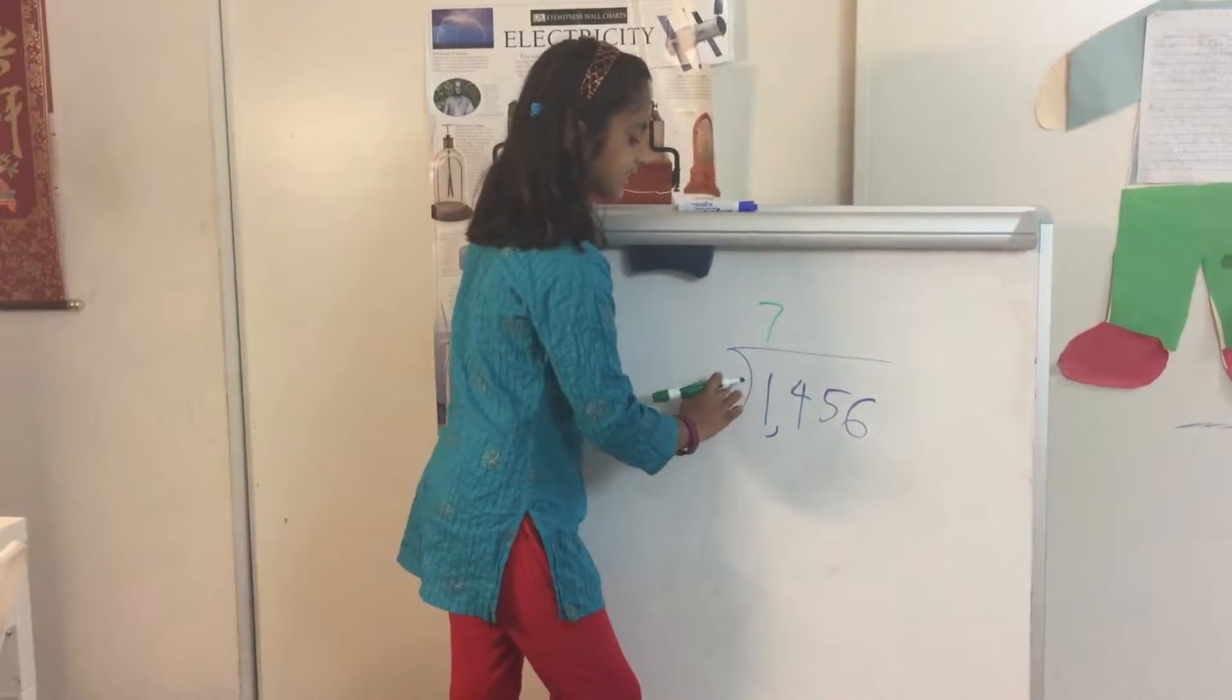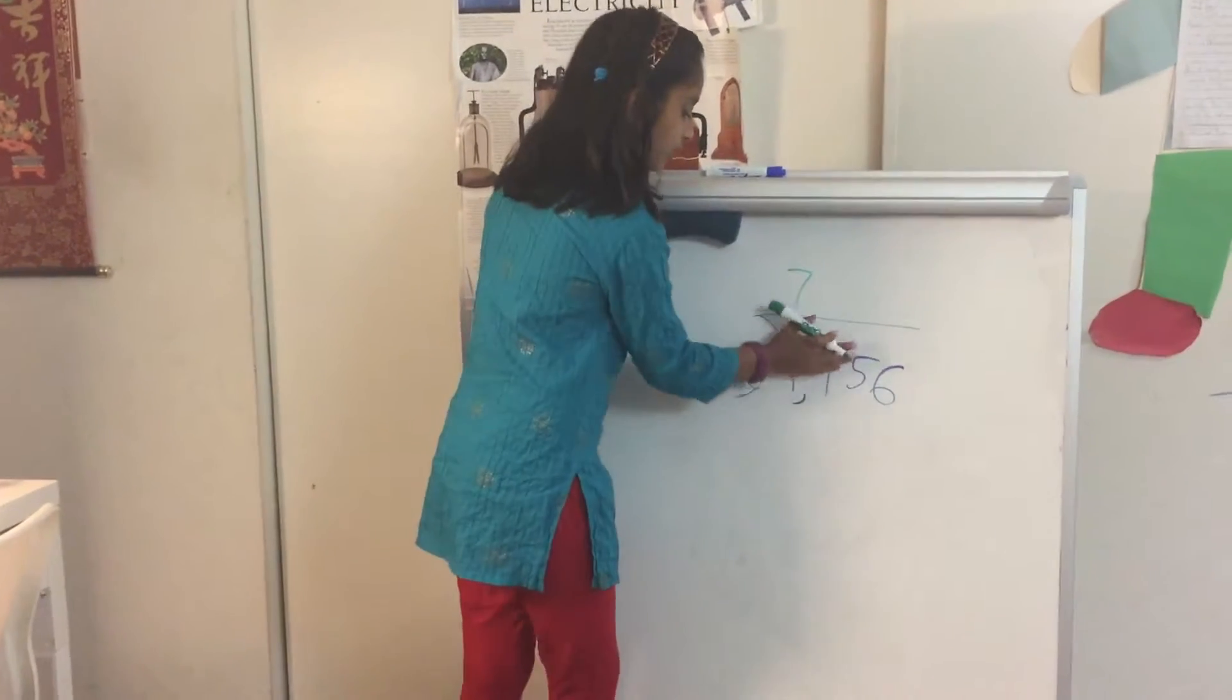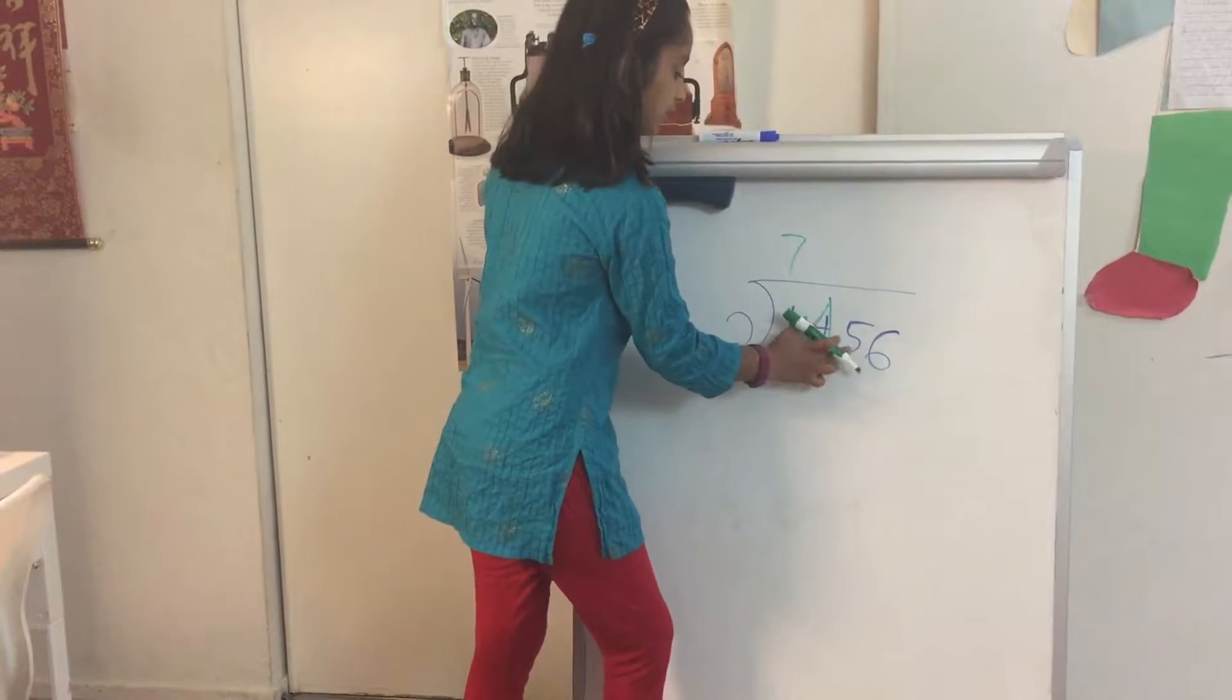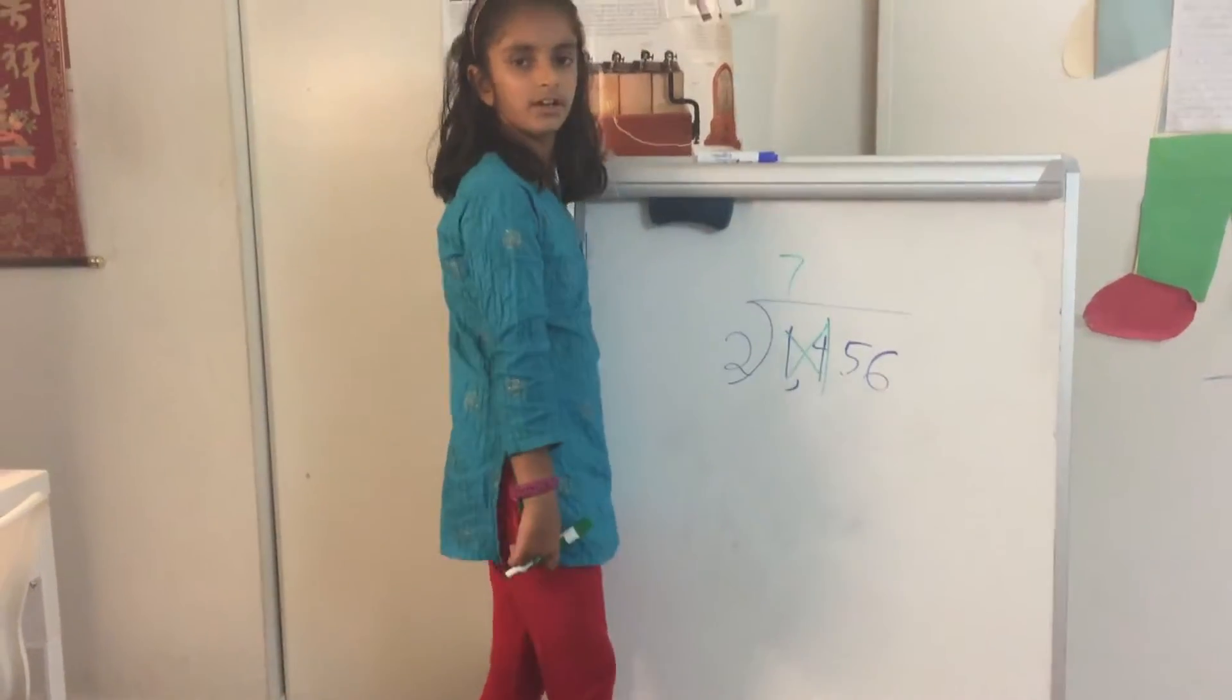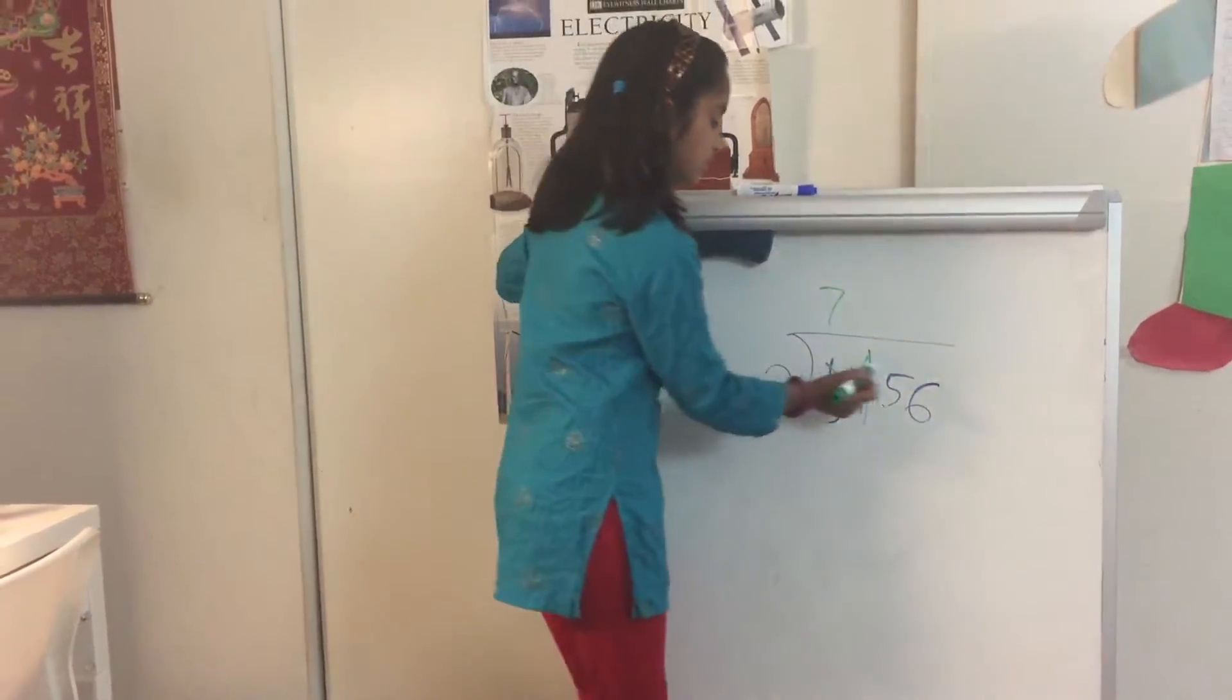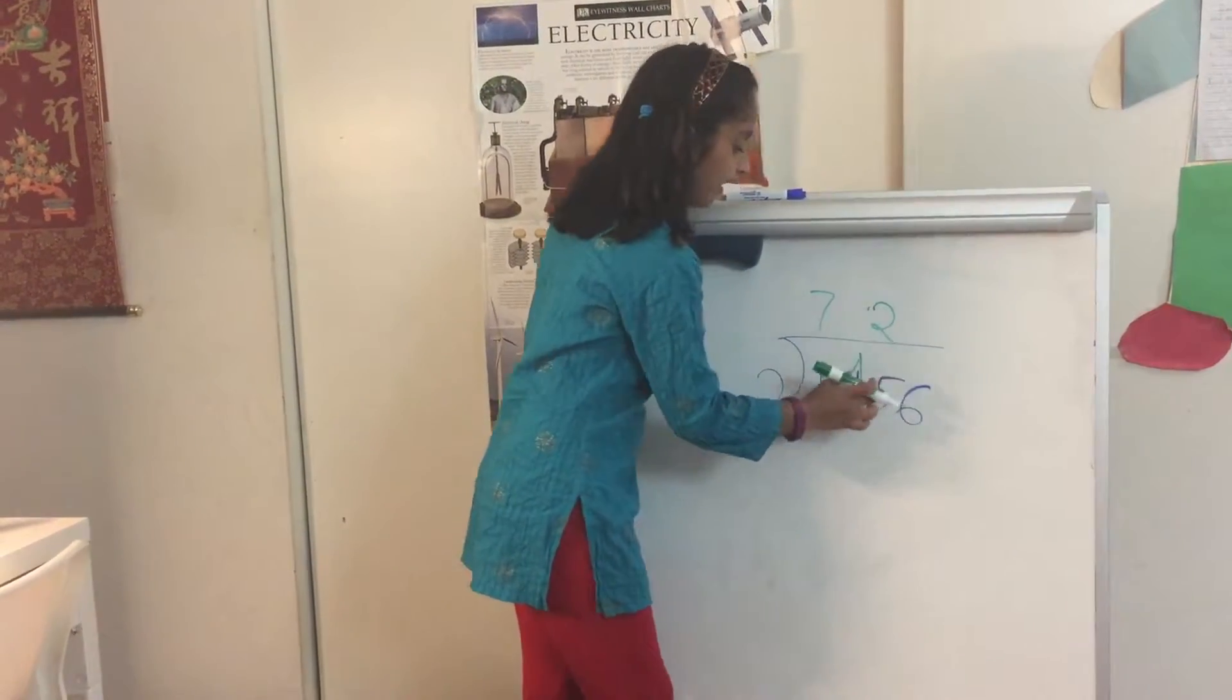And then next, you don't have to add 145 now. So now you forgot about your 14. Leave that to the side. And then, now you think of the five. Can you do two times what is the closest to five? Two times what is the closest to five? Two, right? So you write that because two times two is four.